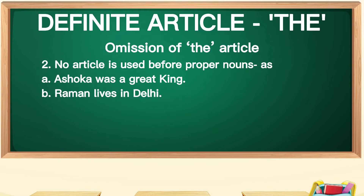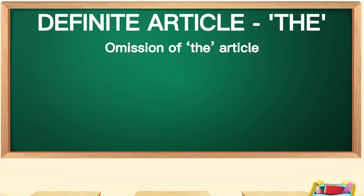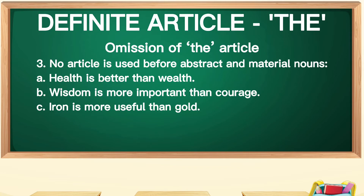The second case: no article is used before proper nouns. As I told you earlier, no articles are used before proper nouns. For example: 'Ashoka was a great king.' 'Raman lives in Delhi.' The third case: no article is used before abstract and material nouns. Abstract nouns: 'Health is better than wealth.' 'Wisdom is more important than courage.' You are not going to say 'the health' or 'the wealth.' Material nouns: 'Iron is more useful than gold.' We will not say 'the iron is more useful than the gold.'